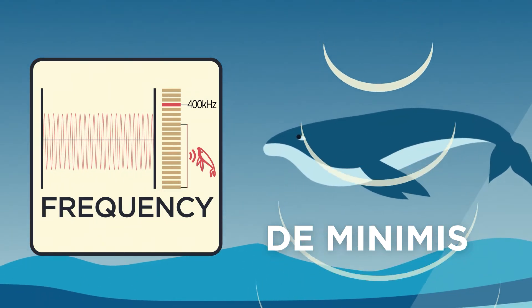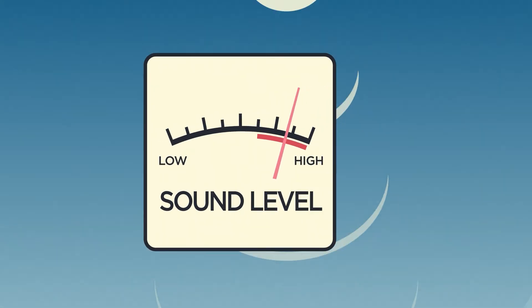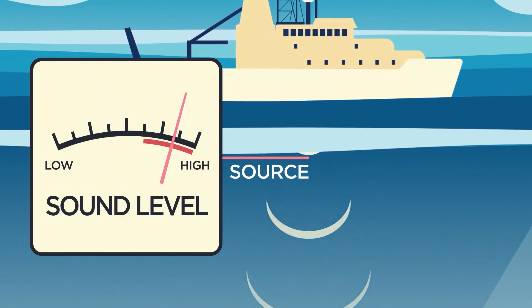The second factor is the amplitude, or how loud the sound is when it reaches an animal. Normally, the amplitude is defined as the source level from the device generating the sound.